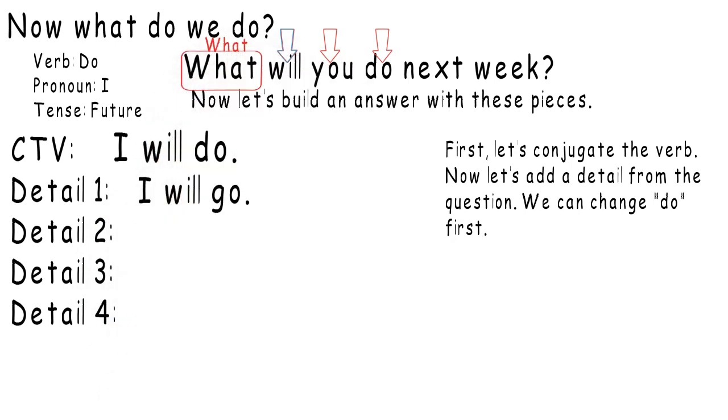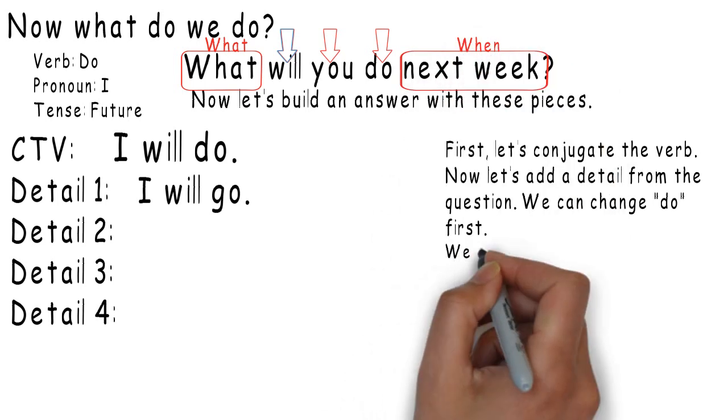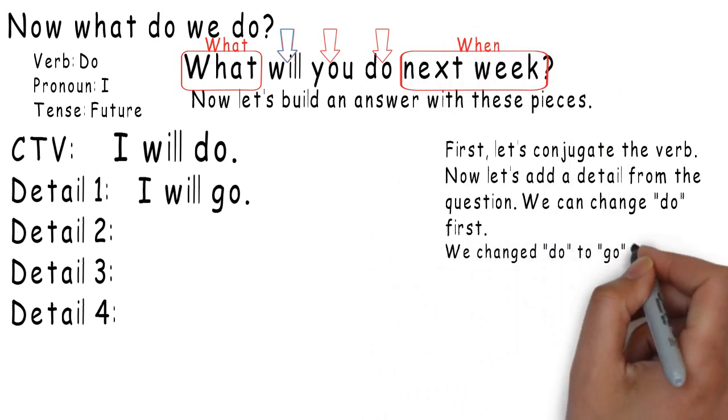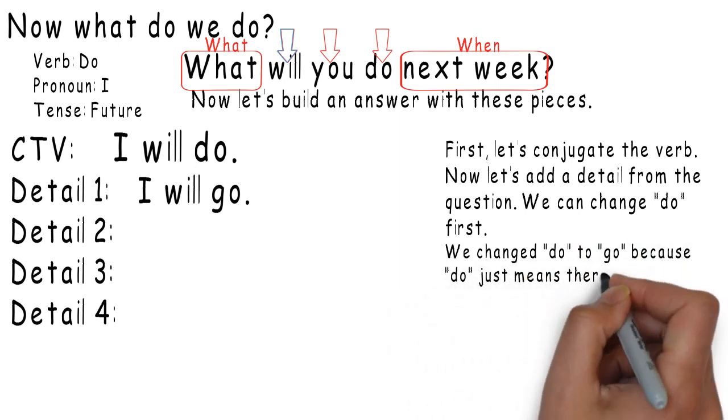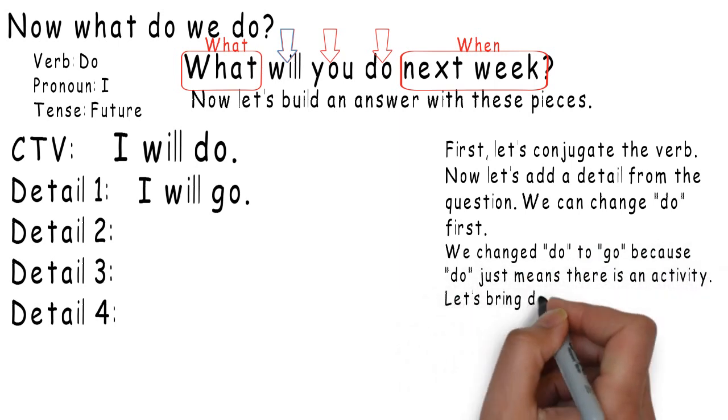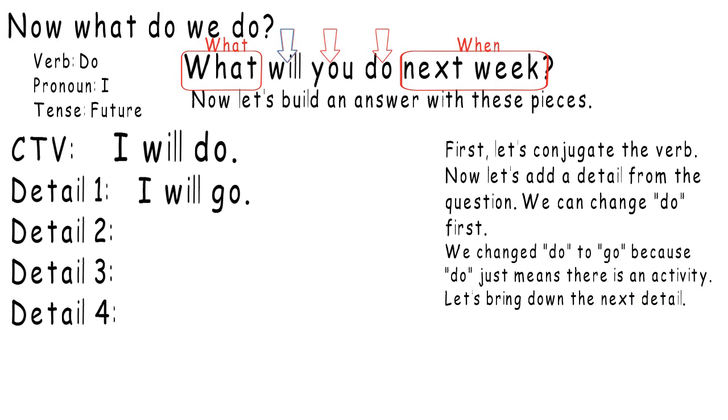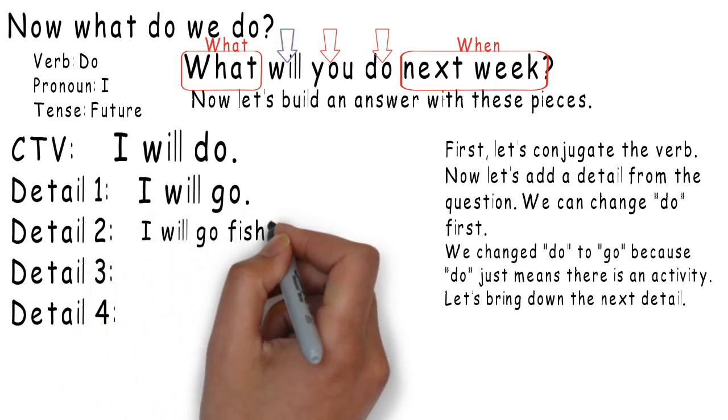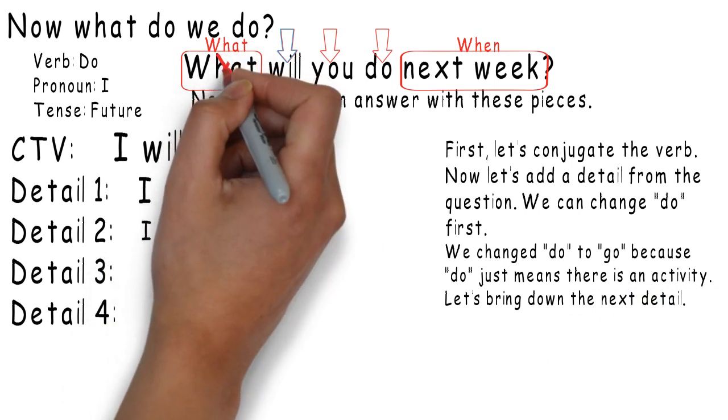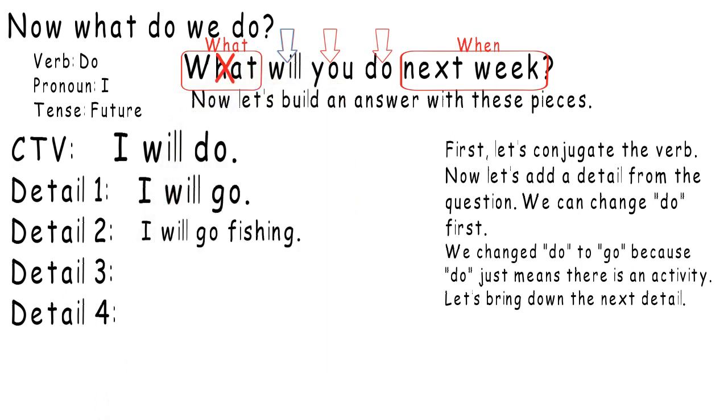What is a what question. And, next week is a when detail. We changed do to go because do just means there is an activity. Let's bring down the next detail. I will go fishing. What? What will I do? I will go fishing.